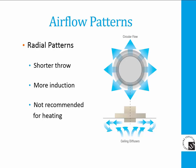Circular flow patterns have high induction of the room air into the discharge jet and have a tendency to have the air curl back at the end of the jet toward the diffuser. Radial air patterns are well suited for variable volume VAV applications and cooling only applications, but are not well suited for heating applications.